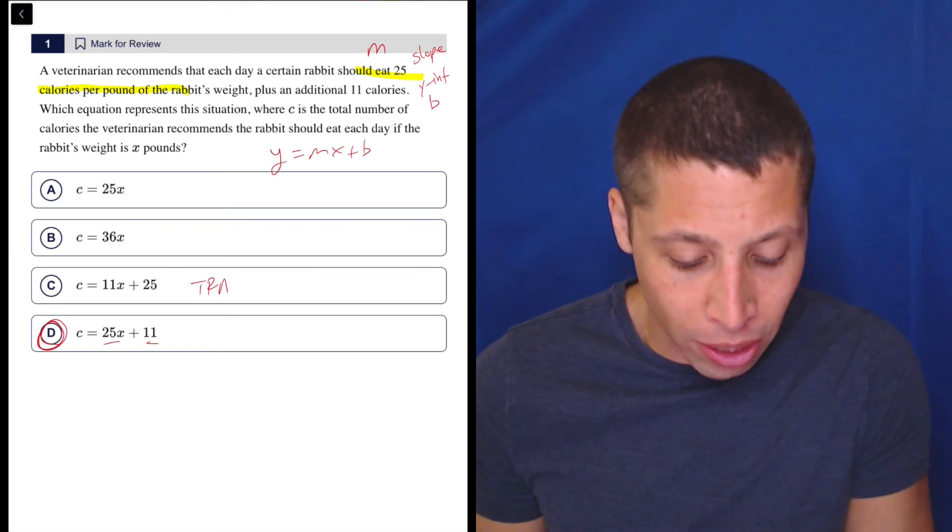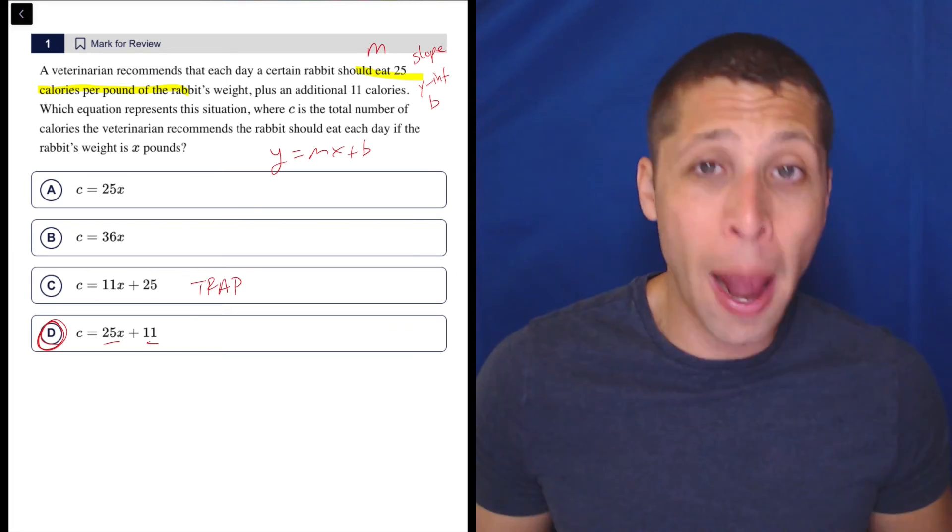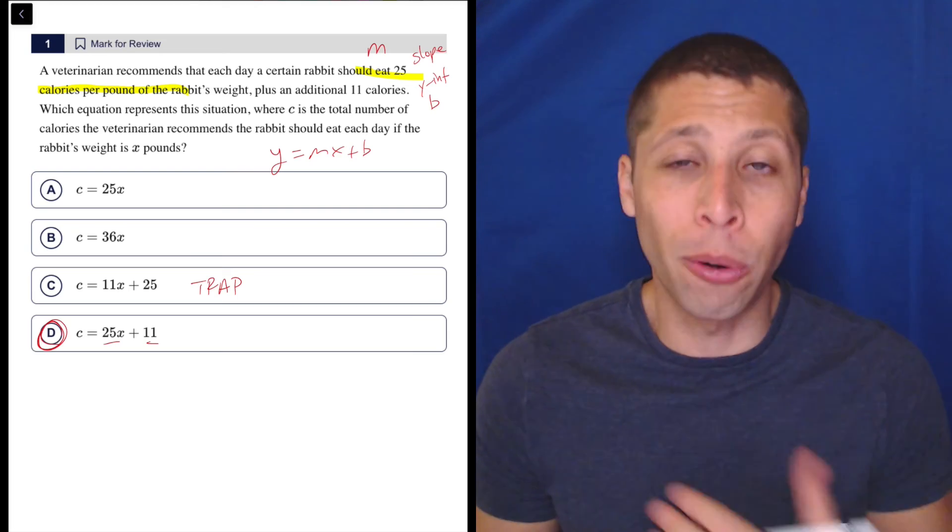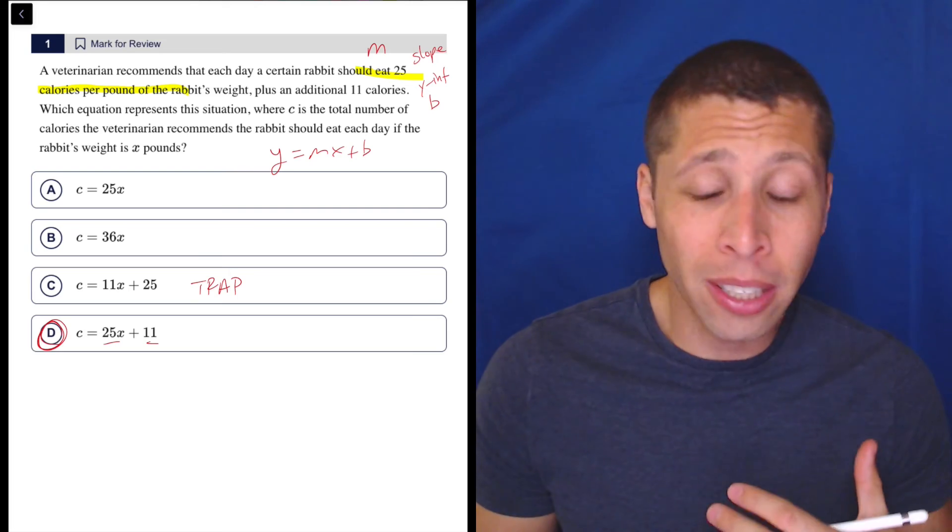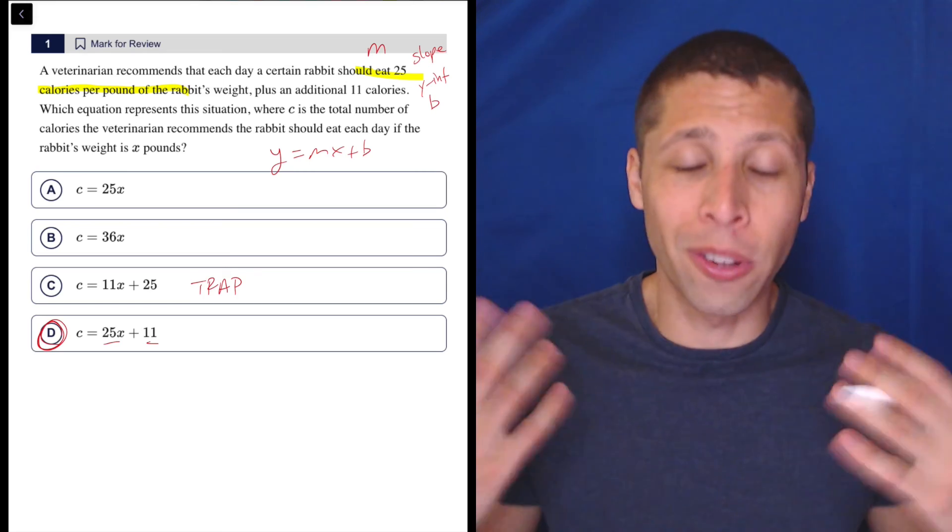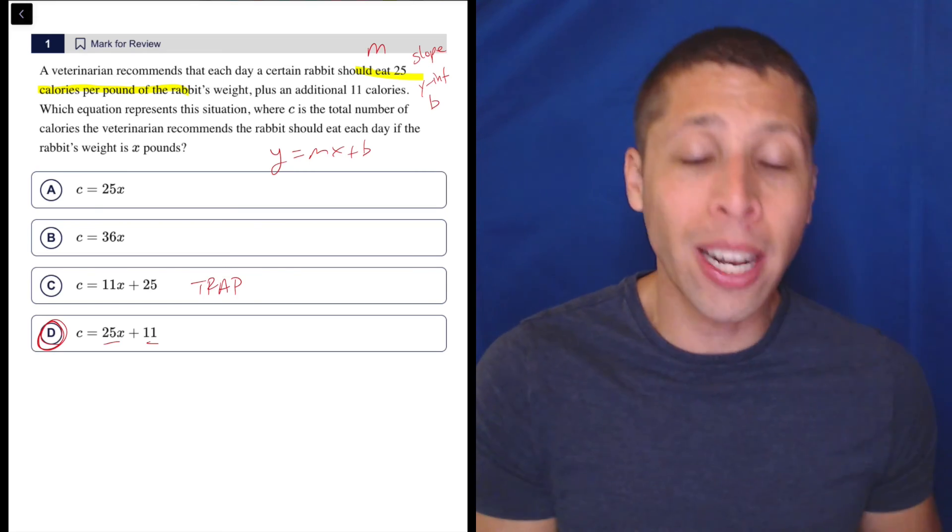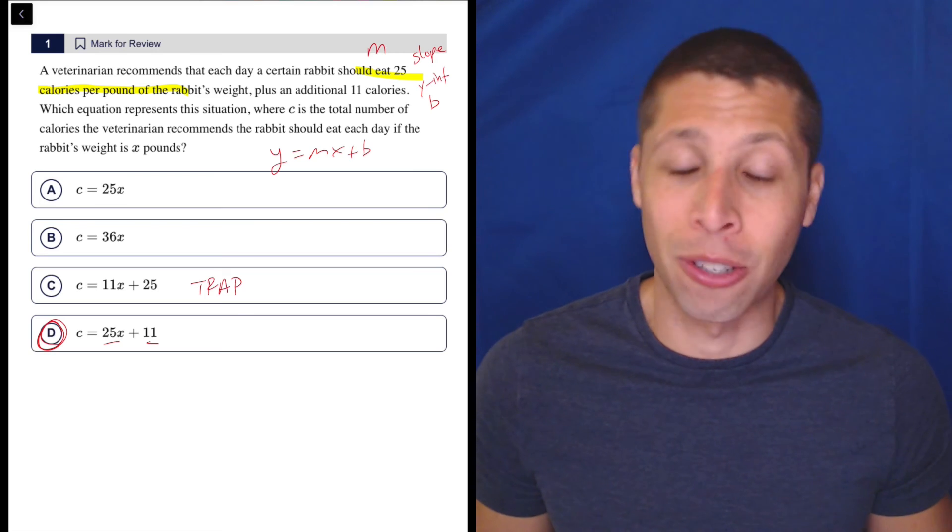But just recognize that even on easy questions, you're going to have answers that are traps. If you don't quite read correctly, or if you make a quick assumption, you're going to get it wrong. The equation that you might write incorrectly will still be there to catch you, and so you might not know.